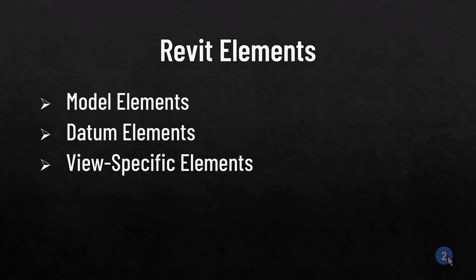When you place a single instance, you place a single element. There are actually three kinds of elements: model elements, datum elements, and view-specific elements. Let's take a closer look at those.